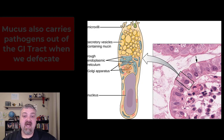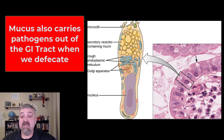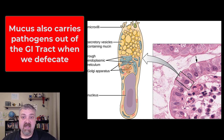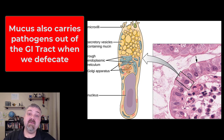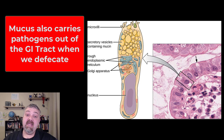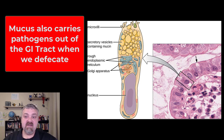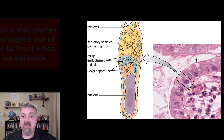Here we see the goblet cells that actually produce mucus. In this example it would be producing mucus that lines your GI tract. The mucus in your GI tract captures some of these pathogens potentially and then carries them away in fecal material, so we have constant movement — this flushing action also occurs in your GI tract.